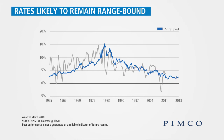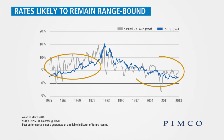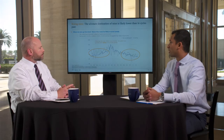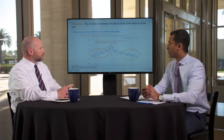What we've seen historically going back to the 50s is that the 10-year tends to be just under nominal growth, other than the period of high inflation in the 80s, which was a different regime. When you think about this relationship, does this framework still hold today, and if so, where do you think 10-year rates are going from here?